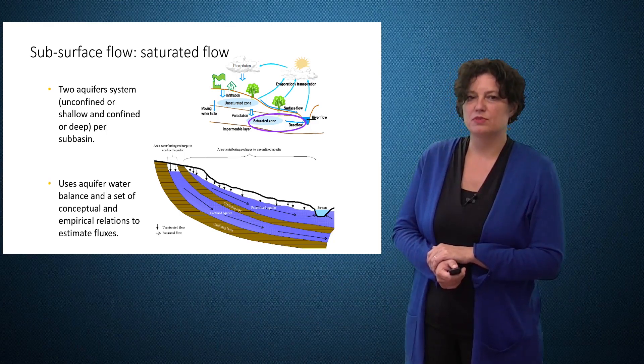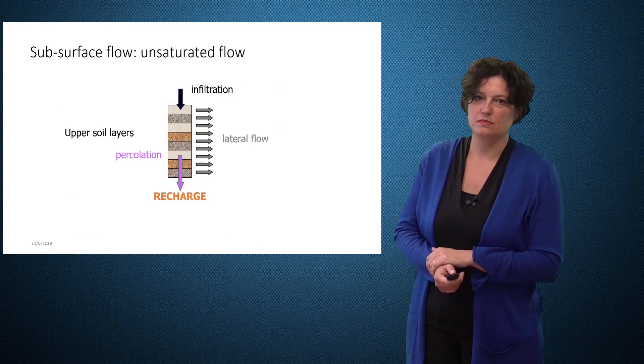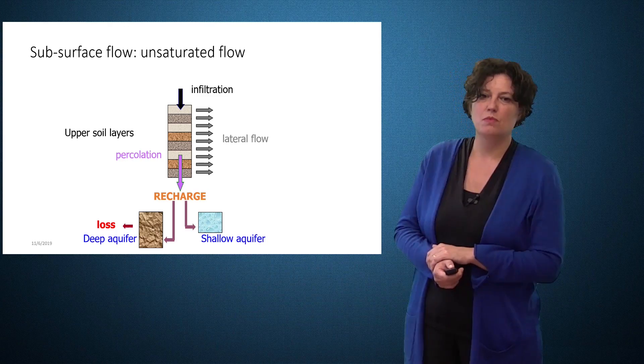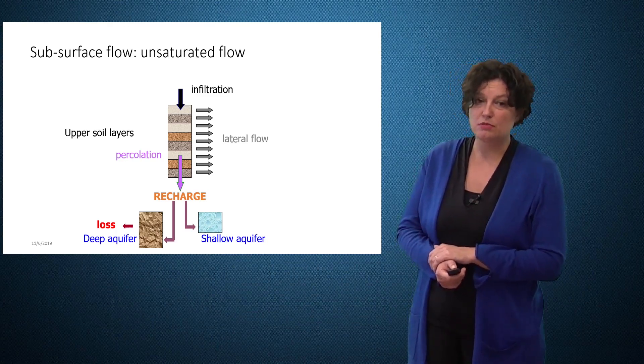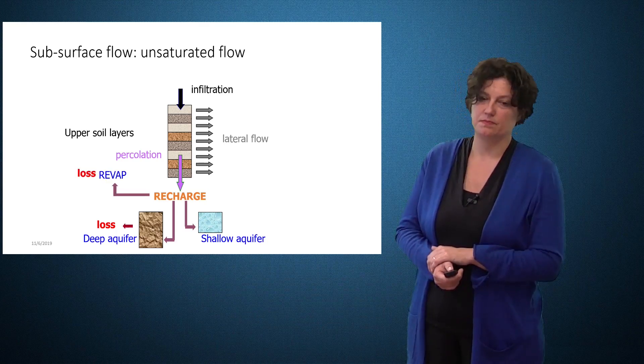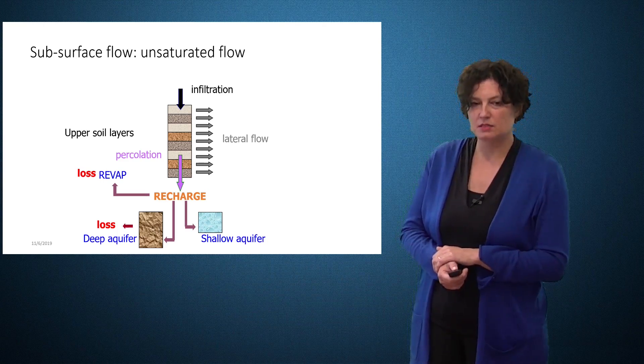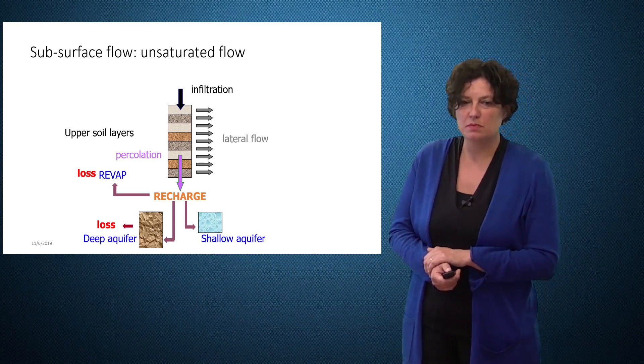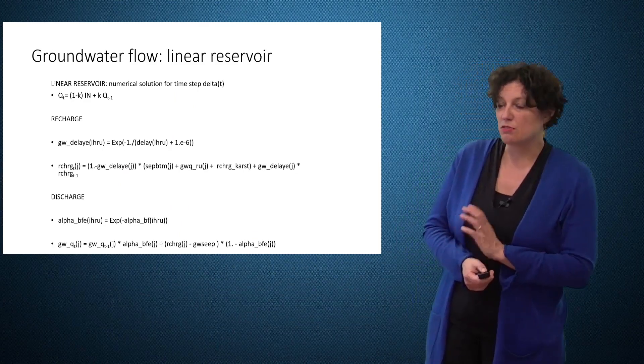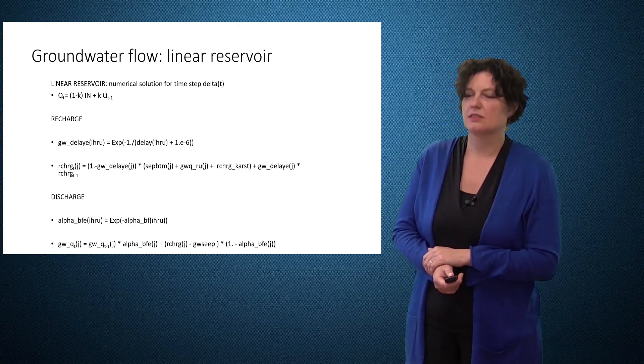Finally, we have another component of subsurface flow, the saturated flow. This is where ground water flow is produced. It starts from the recharge, but then it further goes into different fluxes. Part of the recharge will go to the shallow aquifer, but part of the recharge will go to the deep aquifer. This component is a loss and will not reach the river at any point. From the recharge, we also have a component which is called REVAP. In the manual it is described as capillary rise, but within the SWAT model this component does not return to the soil, so it's another loss.